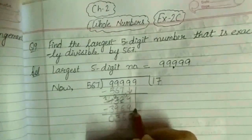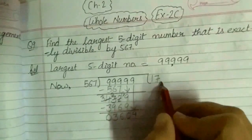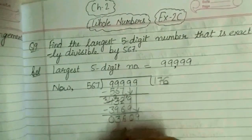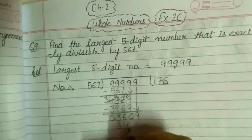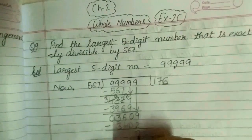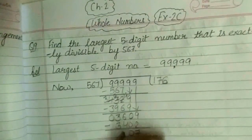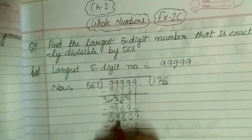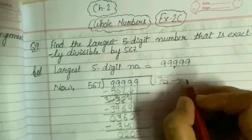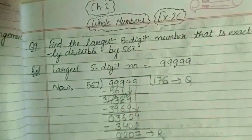Now this 9 will be carried. The next number you can take is 6. 567 sixes are 3,402. Now subtract them. 9 minus 2 will give me 7, 0 minus 0 will give me 0, 6 minus 4 will give me 2, and 3 minus 3 will give me 0. So 176 is the quotient and 207 is the remainder.